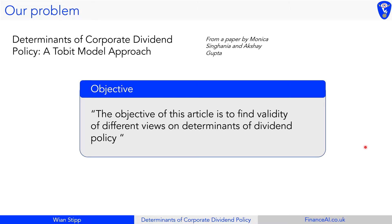Now we can talk about the objective of this project and what we're trying to accomplish. We're using a similar outline to this paper here — this article already published, which you can look up yourself, although you might find that you have to pay to get it unless you're subscribed to a service such as JSTOR or a similar one. If you're a student, have a look at your local library and see if it's available online.